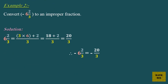Example 2. Convert minus 6 and 2 thirds to an improper fraction. Solution. 6 and 2 thirds equals 3 times 6, plus 2, over 3. Which equals 18 plus 2, over 3. Which equals 20 over 3.